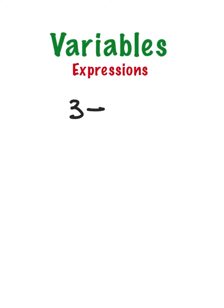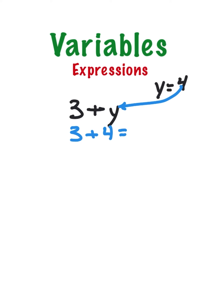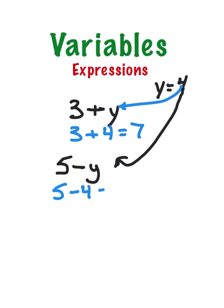Let's do examples. For the expression three plus y, if y equals four, I plug and chug: three plus four equals seven. For five minus y, since y is four, I rewrite it as five minus four, which gives me one.